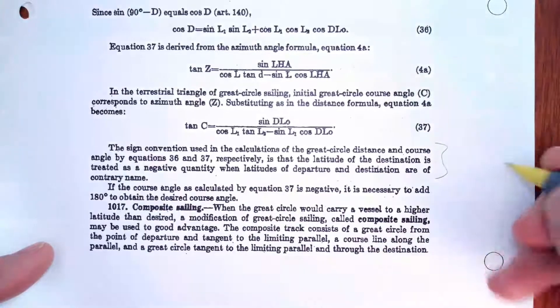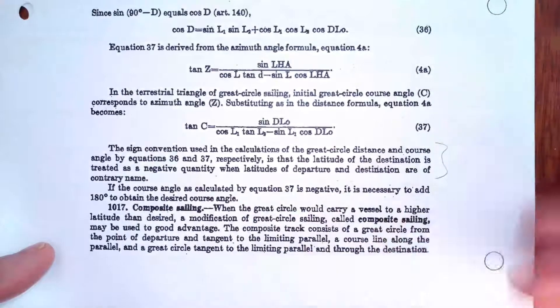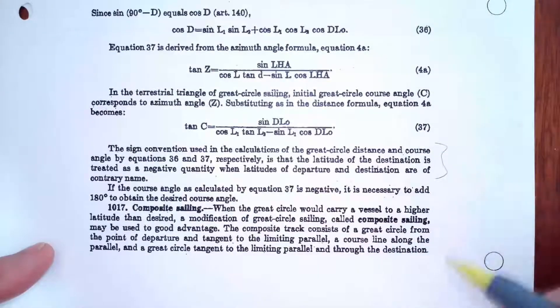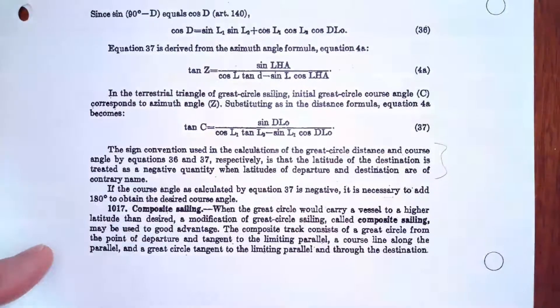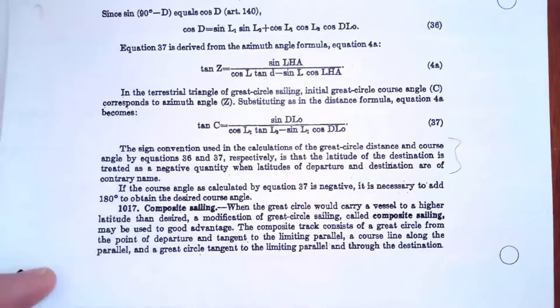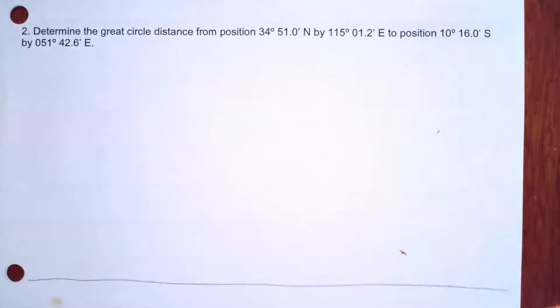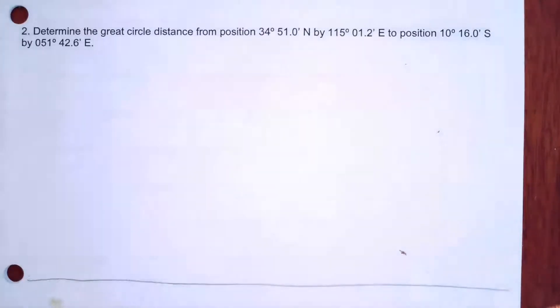What that basically means is: if you cross the equator on your voyage, L2 should be treated as a negative.